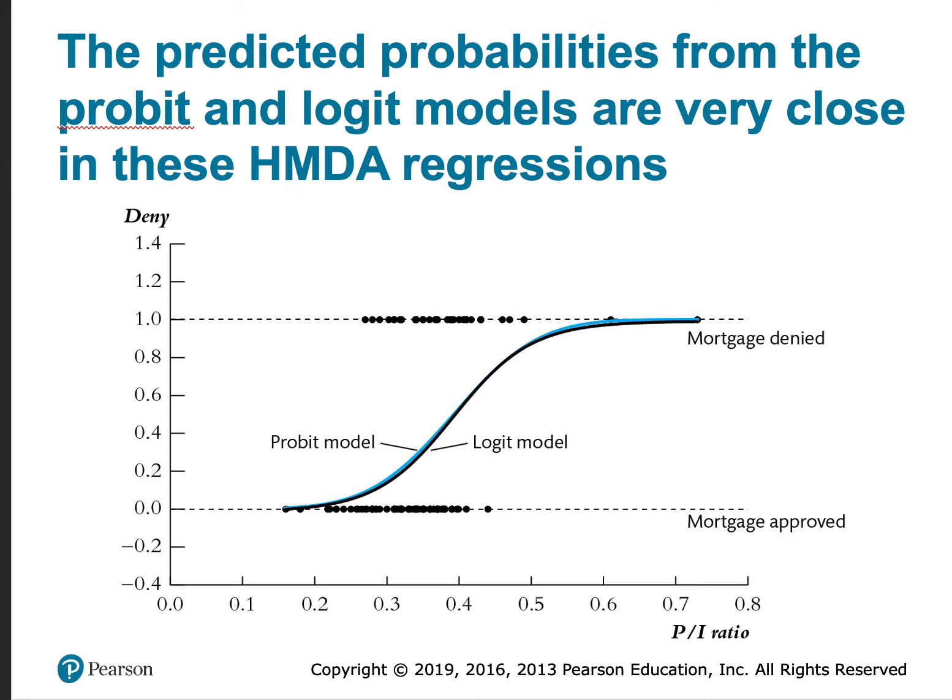Let's look at a plot of the predictions. The predicted probabilities from the probit and logit models are very close in these Home Mortgage Disclosure Act regressions. You can see that the probit model is just a little bit higher for the smaller values of the payment to income ratio where it lies just above the probit model.